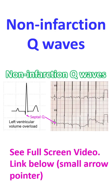Most of us think of myocardial infarction when pathological Q waves are seen on the ECG. But Q waves of different types can occur without myocardial infarction. Here is a brief review of some of them.